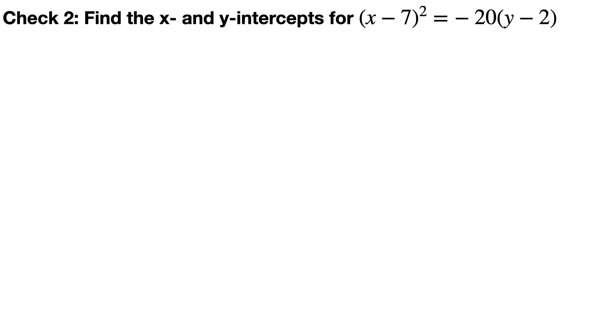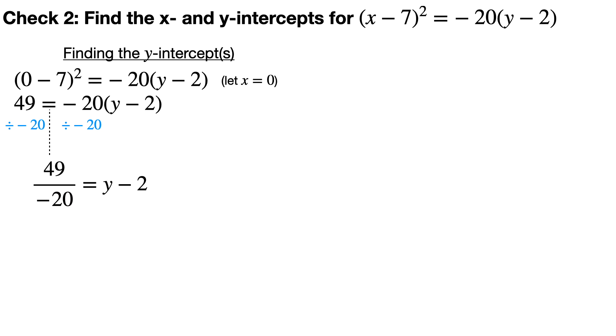Okay, so we're going to find the x and y-intercepts for this equation. And in order to find the y-intercept, or there could be one or there could be more than one in different instances, you set x equal to 0, because the y-axis is the line x equals 0. In other words, it consists of all the points where the x value is 0. And then you simplify one step at a time. So 0 minus 7 squared is 49, and you can divide both sides by negative 20 to get a number is equal to y minus 2. You can add 2 to both sides to have y is equal to that particular number. And then you could solve it by hand or enter your calculator to get negative 0.45 is equal to y.